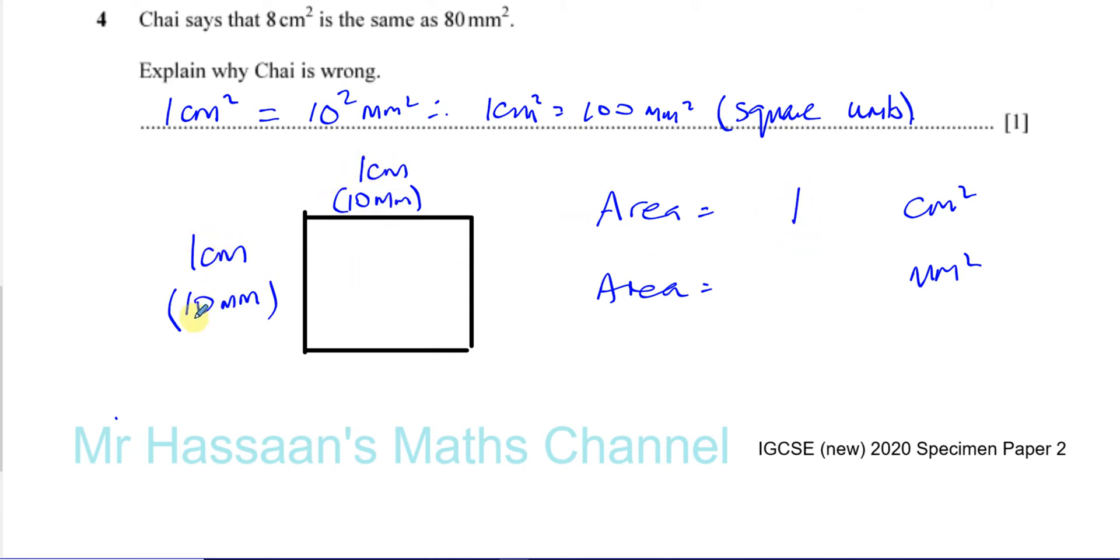In millimeters squared, you multiply 10 by 10, which gives you 10 times 10, which is 10 squared, which gives you 100. So when you are converting units of area, you have to square the normal conversion.